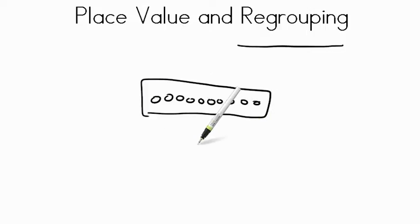So if I add 7 ones plus 3 ones, we have the number 10. We have one 10 and no ones.